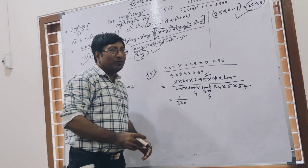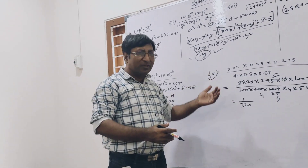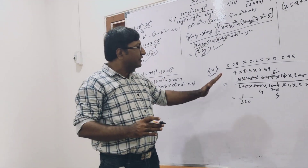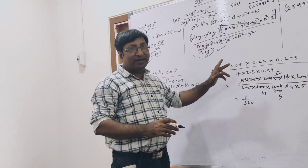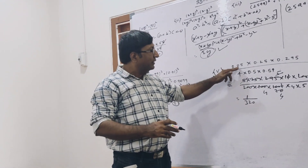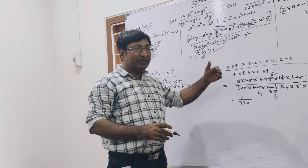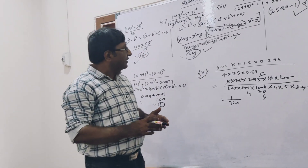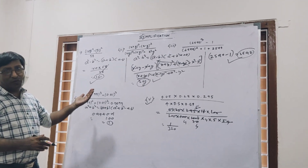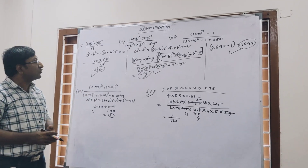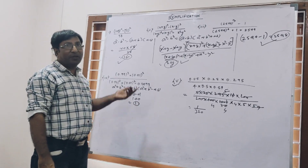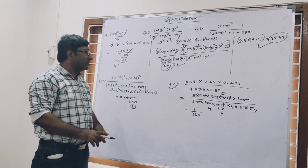You can solve this type of question even if the numbers or decimal points are different. What is the basic rule? First remove the decimal. When removing the decimal, see how many digits are after the decimal: if 2 digits, the denominator is 100; if 3 digits, it is 1000. In this way you can solve these types of questions. We applied three types of formulas: a squared minus b squared, a cubed minus b cubed, and a cubed plus b cubed. Thank you!